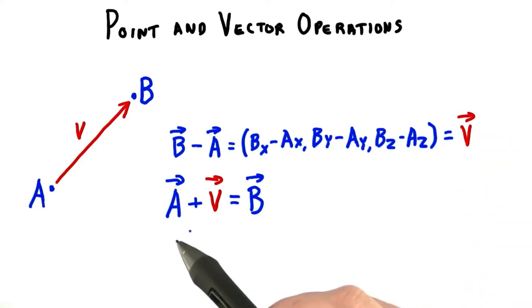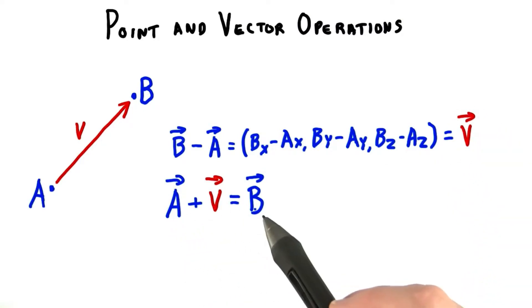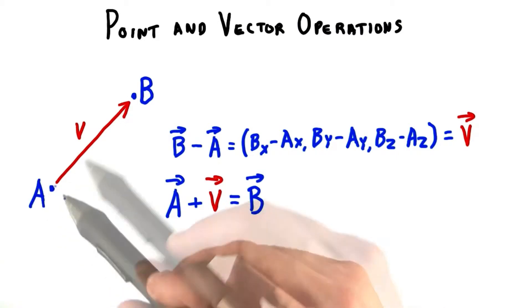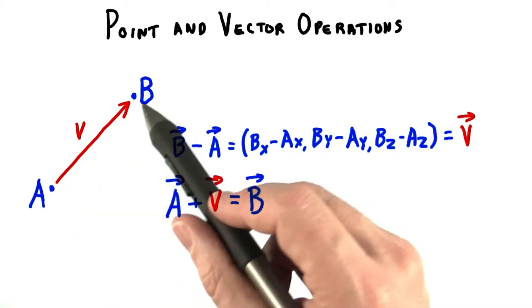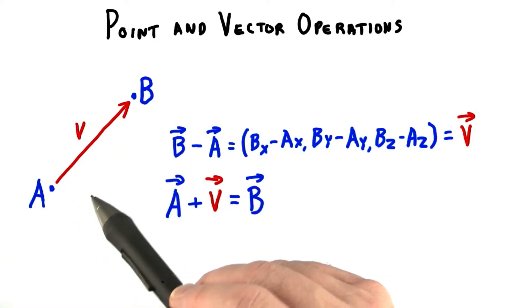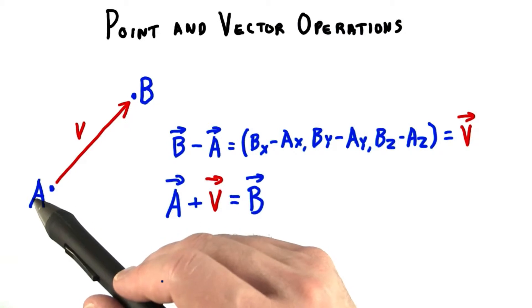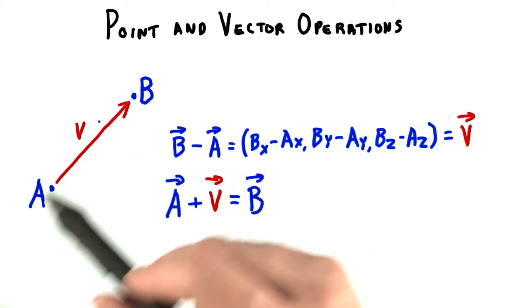The reverse also holds true: A plus V equals B. While we can subtract points to get a vector, our system doesn't produce anything geometrically meaningful if you add the two points together.